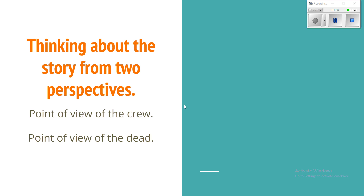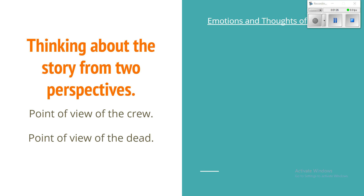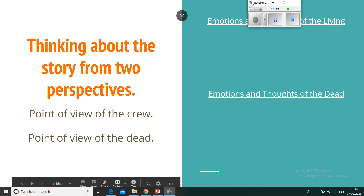Thinking about this chapter — chapter five — about when they come to the land of the dead and they talk to Tiresias, I want you to think about that story from two perspectives, from two different angles: from the point of view of the crew as they were walking through the land of the dead and got to all those ghosts, and also from the point of view of the dead themselves. Just jot down in your book — you don't have to do it on the Google Classroom part — just jot down a couple of ideas.